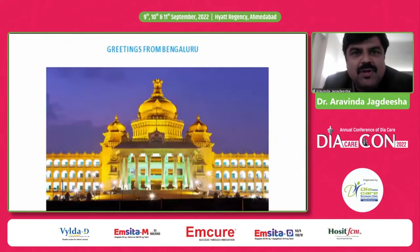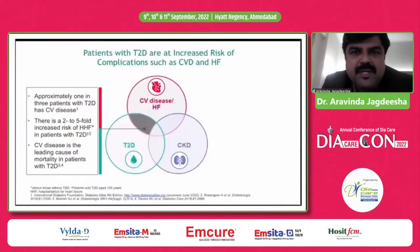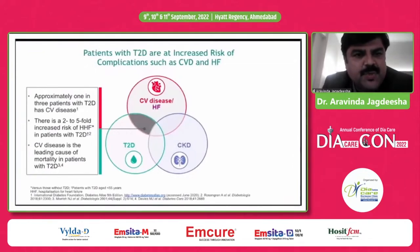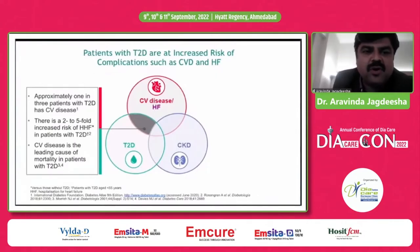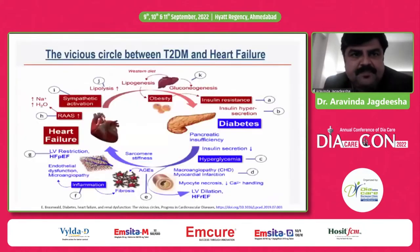Greetings to all of you from Bangalore. Patients with type 2 diabetes are at increased risk of complications such as CVD and heart failure. Approximately one in three patients with type 2 diabetes has CV disease. There is a two- to five-fold increased risk of hospitalization for heart failure in patients with type 2 diabetes. CV disease is the leading cause of mortality in patients with type 2 diabetes.